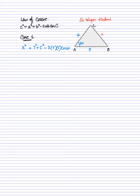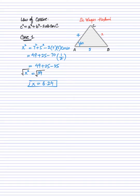After that you need to solve it: 7 squared is 49, 5 squared is 25, minus 2 times 7 times 5 is 70, and cos 60 is 1/2. So 49 plus 25 minus 70 divided by 2 gives 49 plus 25 minus 35, which equals 39. On the left side you have X squared; to eliminate the square you apply a square root on both sides. Finally, X equals the square root of 39, which is approximately 6.24, and that is your answer.